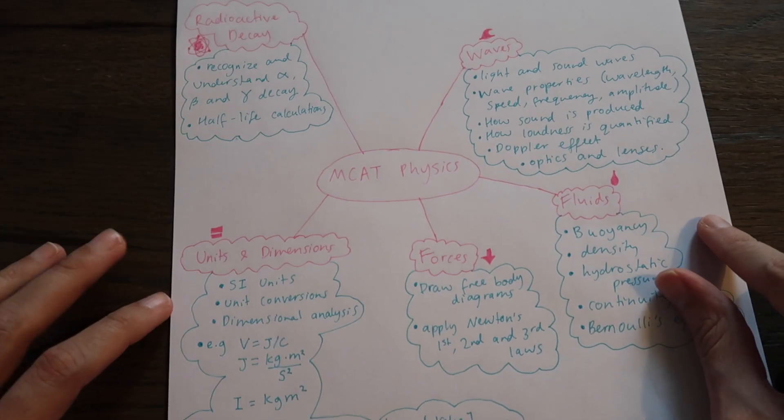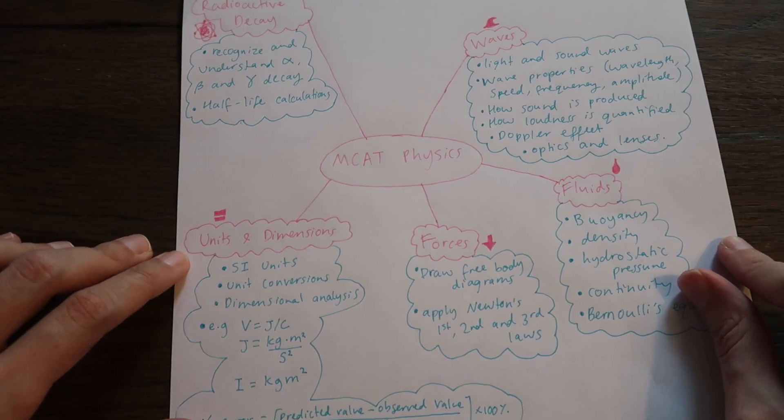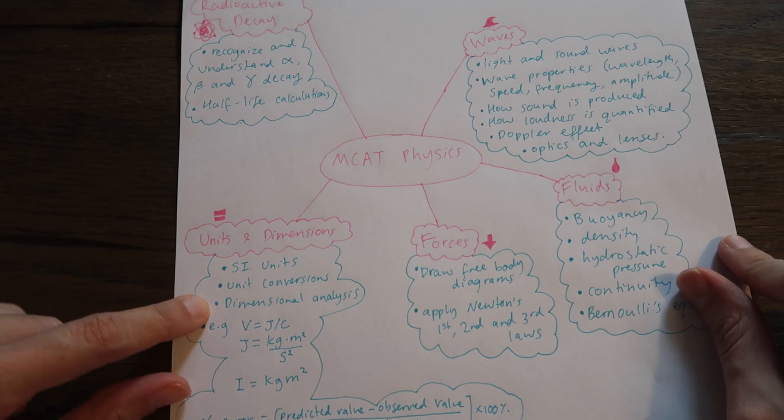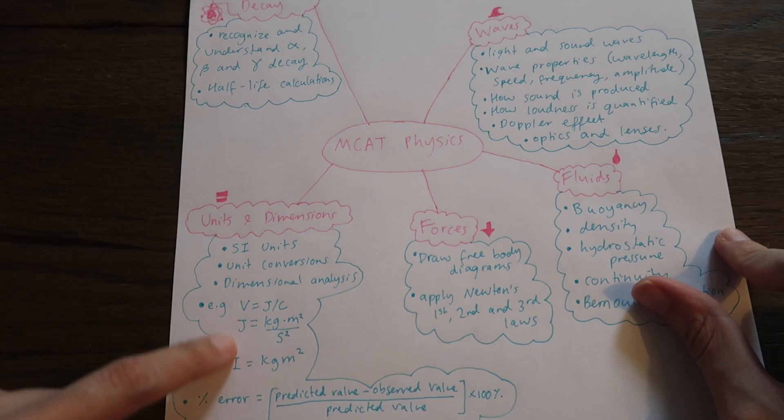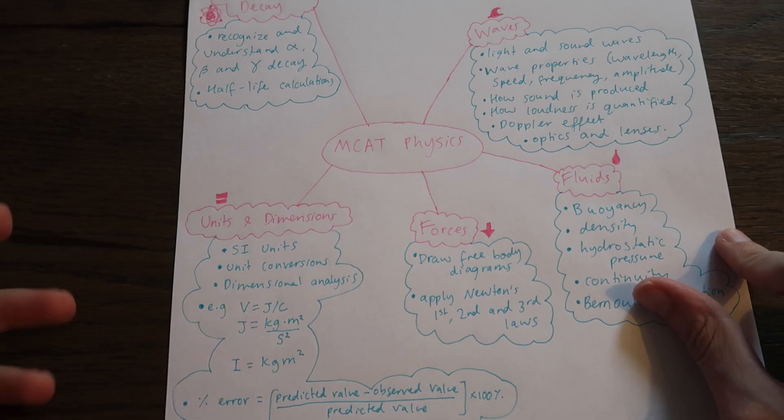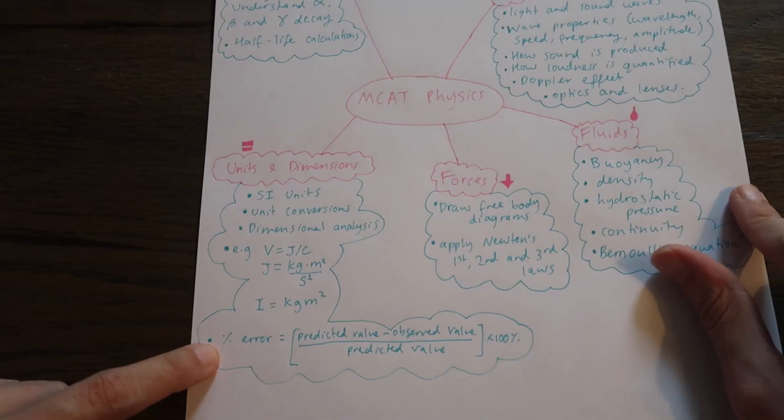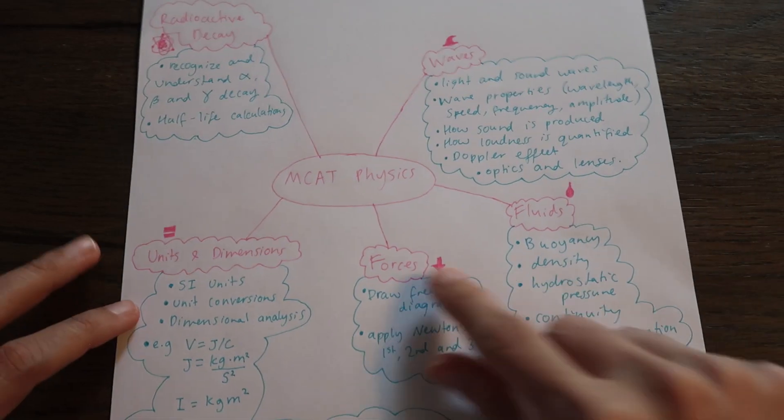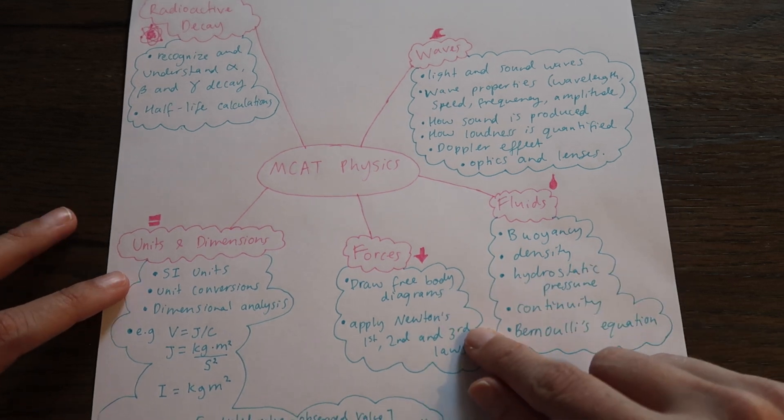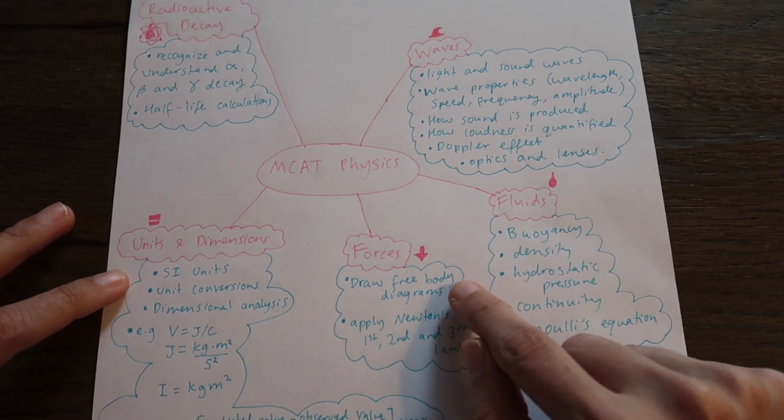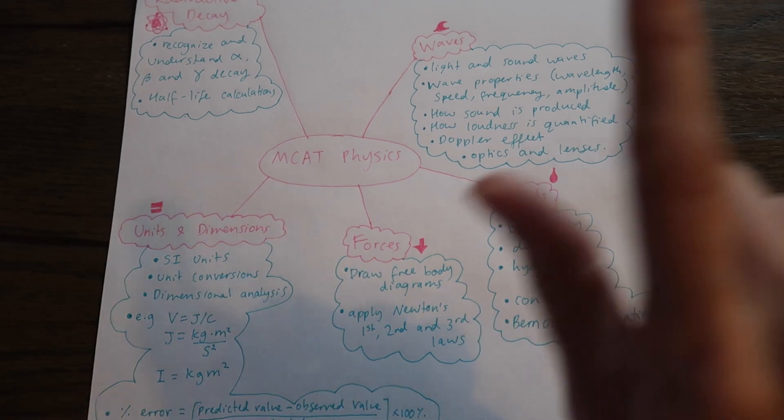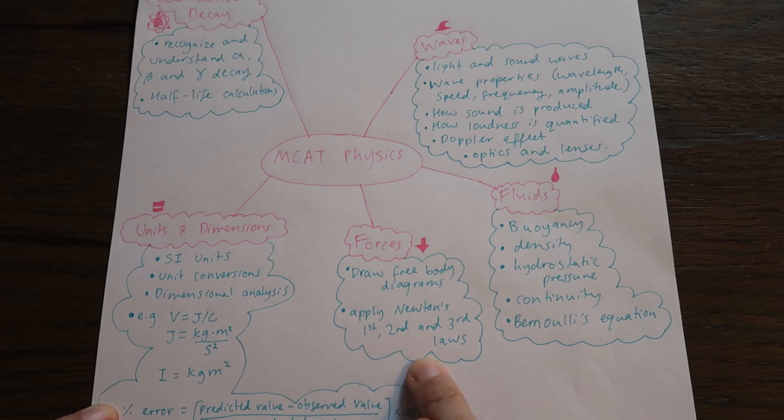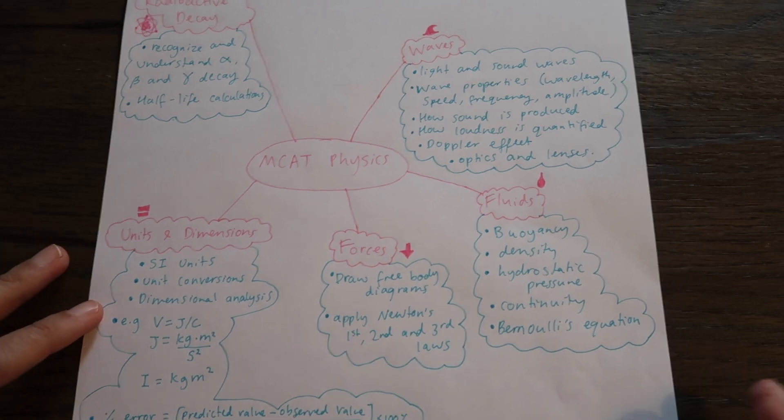Some of the essential points that you'd want to study. Let's start with units and dimensions you'd want to know your SI units your unit conversions how to do dimensional analysis. We've got a few examples here of often forgotten unit definitions and also how to find percentage error. So we have one of these formulas here. For forces of course it's the usual suspects. You'd want to know how to do free body diagrams, those are those pictures with the lines coming off them which show the forces, and apply Newton's first second and third laws to solving problems or doing calculations.